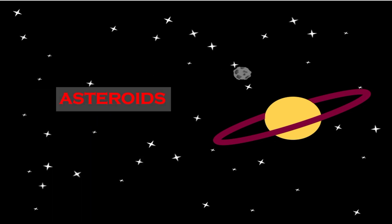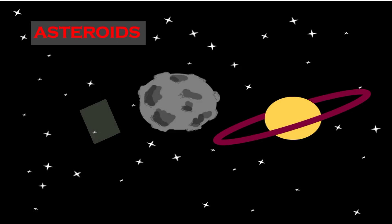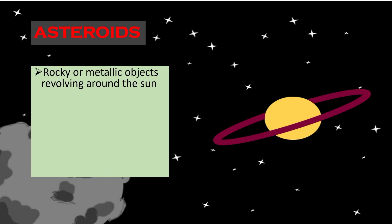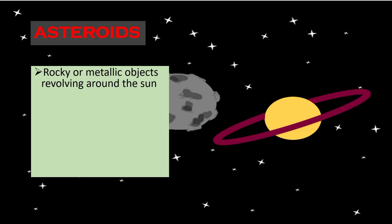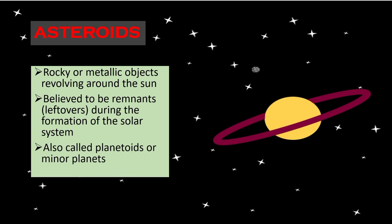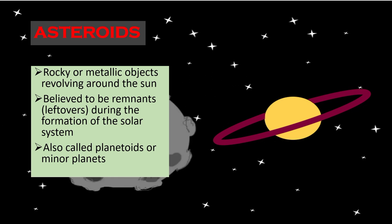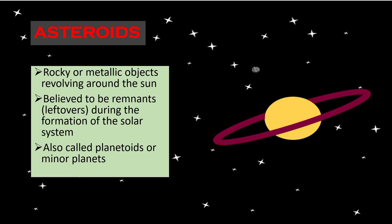Let us begin with asteroids. Asteroids are rocky or metallic objects revolving around the sun. They are believed to be remnants or leftovers during the formation of the solar system. They are also called planetoids or minor planets.